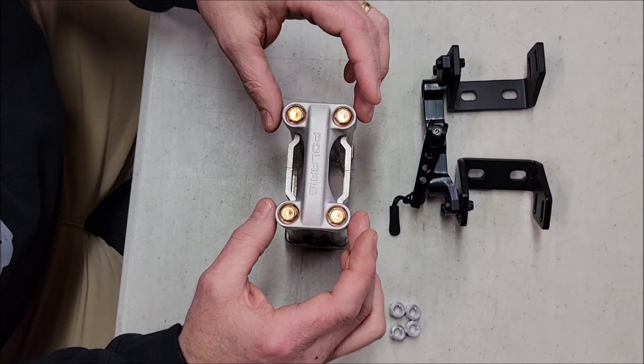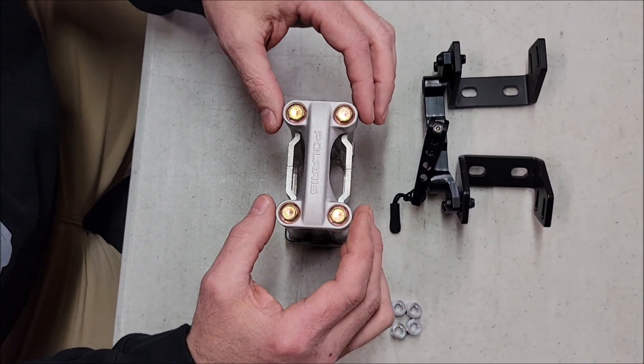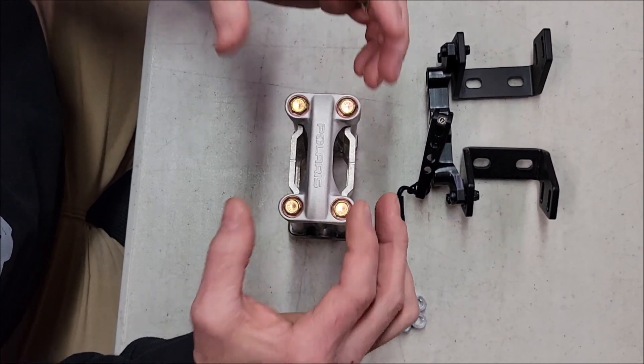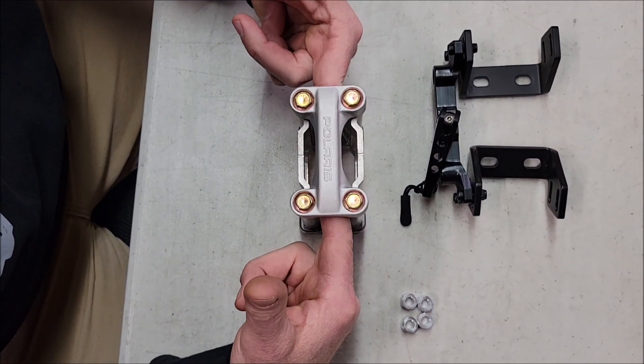I don't have the factory bolts, so these are actually the bolts that come with the kit. Normally you're going to remove the factory bolts. Handlebars normally go right here.